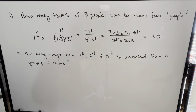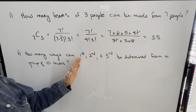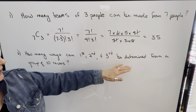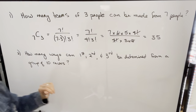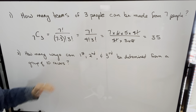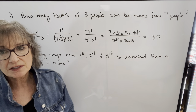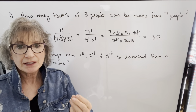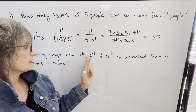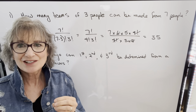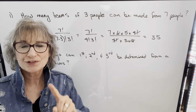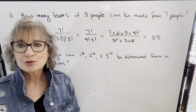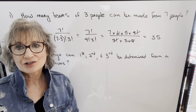Our next example says: how many ways can first, second, and third place be determined from a group of ten racers? In this case, the positioning is important — it's not just the top three winners, it's specifically first, second, and third. Because the order is important, this is a permutation.